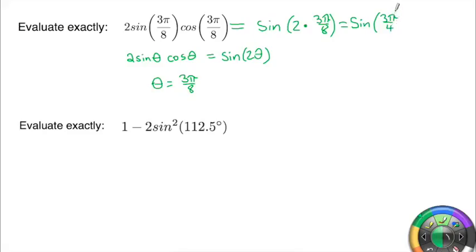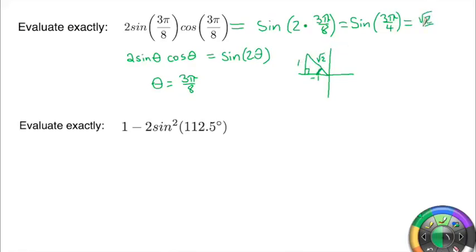Sine of 3π/4 is basically the sine of 45 degrees, so the answer is going to be √2/2 — we just need to confirm the sign. The location of 3π/4 is in the second quadrant. Since sine is positive in the second quadrant, the answer is positive √2/2. So 2·sin(3π/8)·cos(3π/8) equals √2/2.